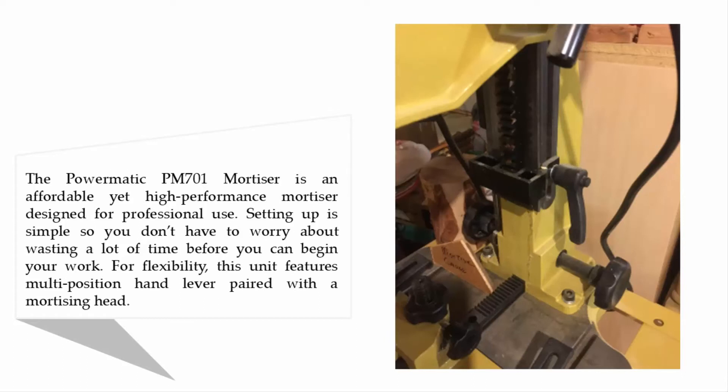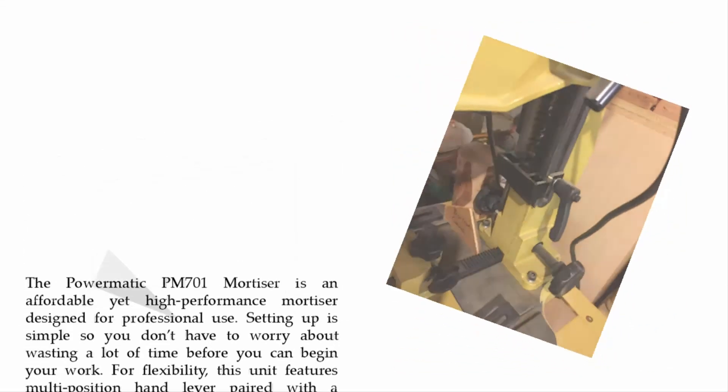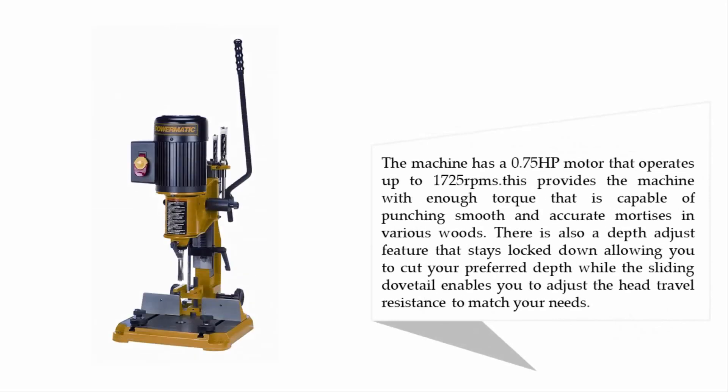For flexibility, this unit features a multi-position hand lever paired with a mortising head. The machine has a 0.75 horsepower motor that operates up to 1,725 RPMs, providing enough torque to punch smooth and accurate mortises in various woods. There is also a depth adjust feature that stays locked down, allowing you to cut your preferred depth, while the sliding dovetail enables you to adjust the head travel resistance to match your needs.